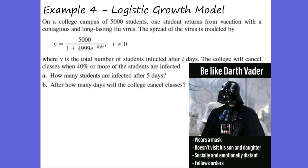We can also use a logistic growth model, which gives a different look. To find how many students are affected after five days, we plug t=5 into the model: 5000 divided by (1 + 4999 × e^(−0.8 × 5)). After five days, we get approximately 54 students infected with this flu virus.